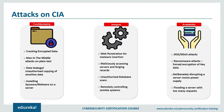Last is availability — best ensured by rigorous hardware maintenance, performing repairs immediately when needed, and maintaining a functional operating system free of software conflicts. Keeping current with system upgrades and providing adequate bandwidth are equally important. Redundancy, failover, and high-availability clusters can mitigate serious hardware issues. Disaster recovery plans must account for unpredictable events like natural disasters and fire, with backup copies stored in geographically isolated, fireproof locations. Firewalls and proxy servers guard against denial-of-service attacks.